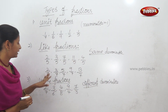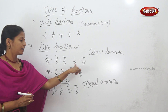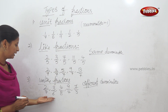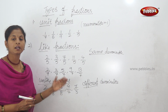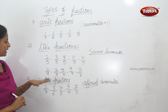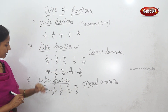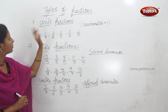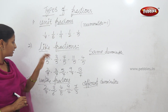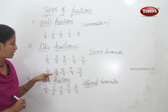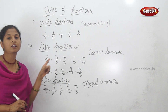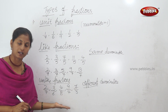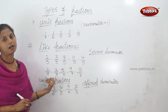For like fractions, all denominators must be the same. For unlike fractions, the denominators must be different. This is the opposite denominator of different numbers — that is unlike fractions.